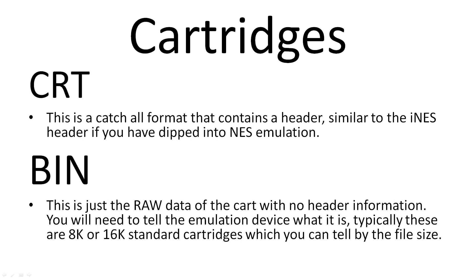Cartridges: CRT is a catch-all format that contains a header similar to the iNES header. It contains the size, layout, and additional logic the cart has — basically you attach it and it works. IN files are just raw data from the cart's ROMs and will pretty much always be 8 or 16K. You can easily tell which one it's supposed to be based on the file size, although if you're unsure how that works it's best just to find a CRT version.